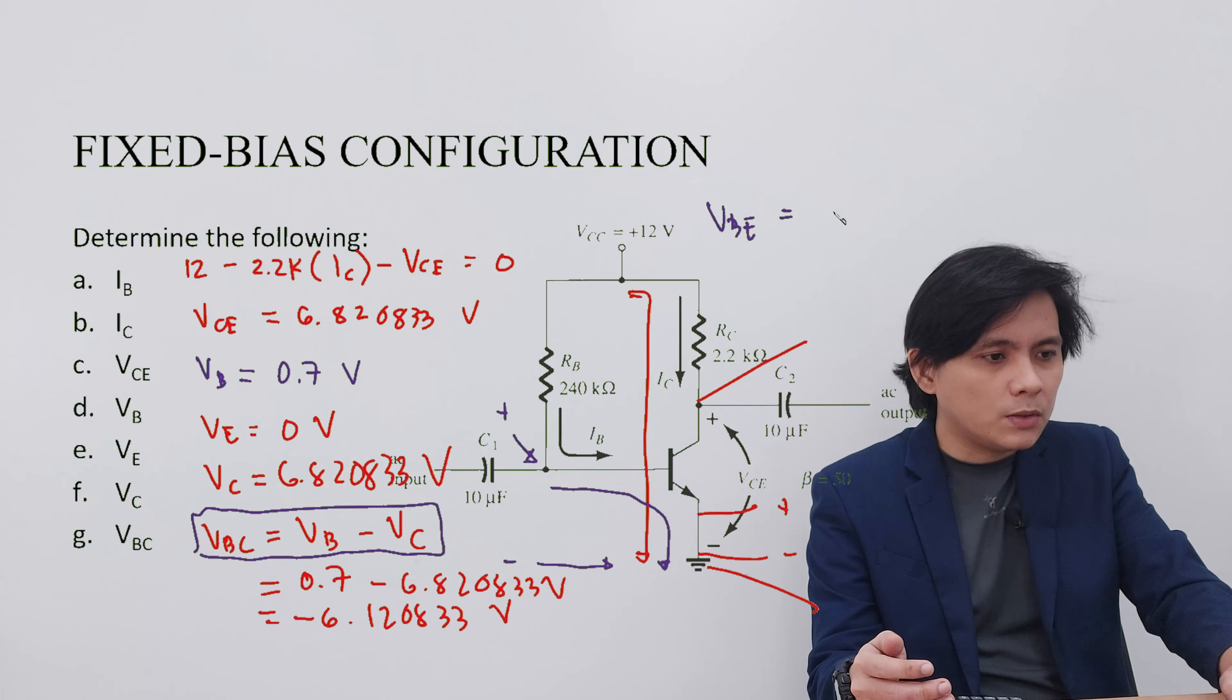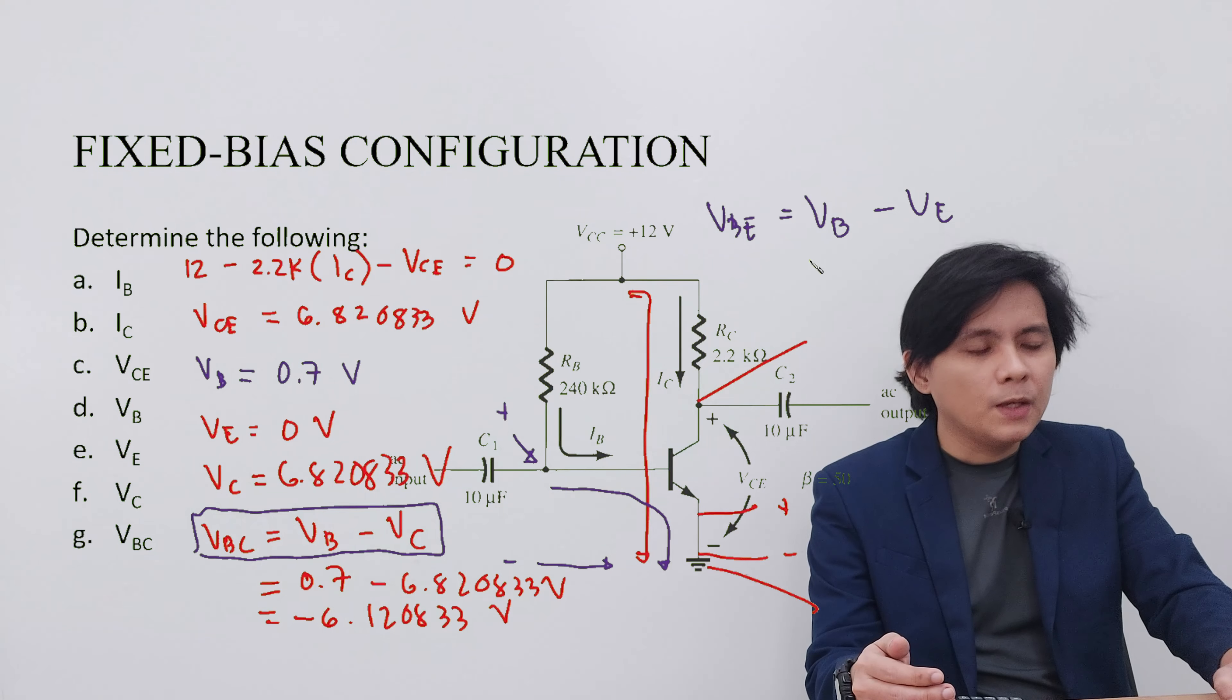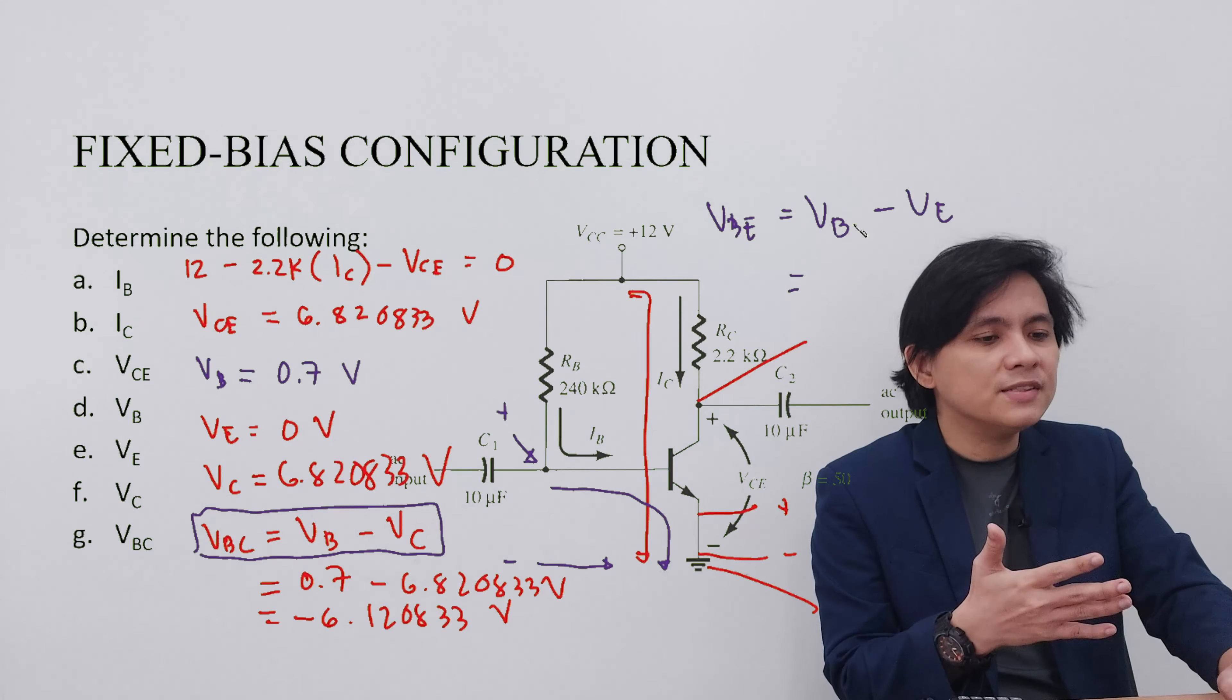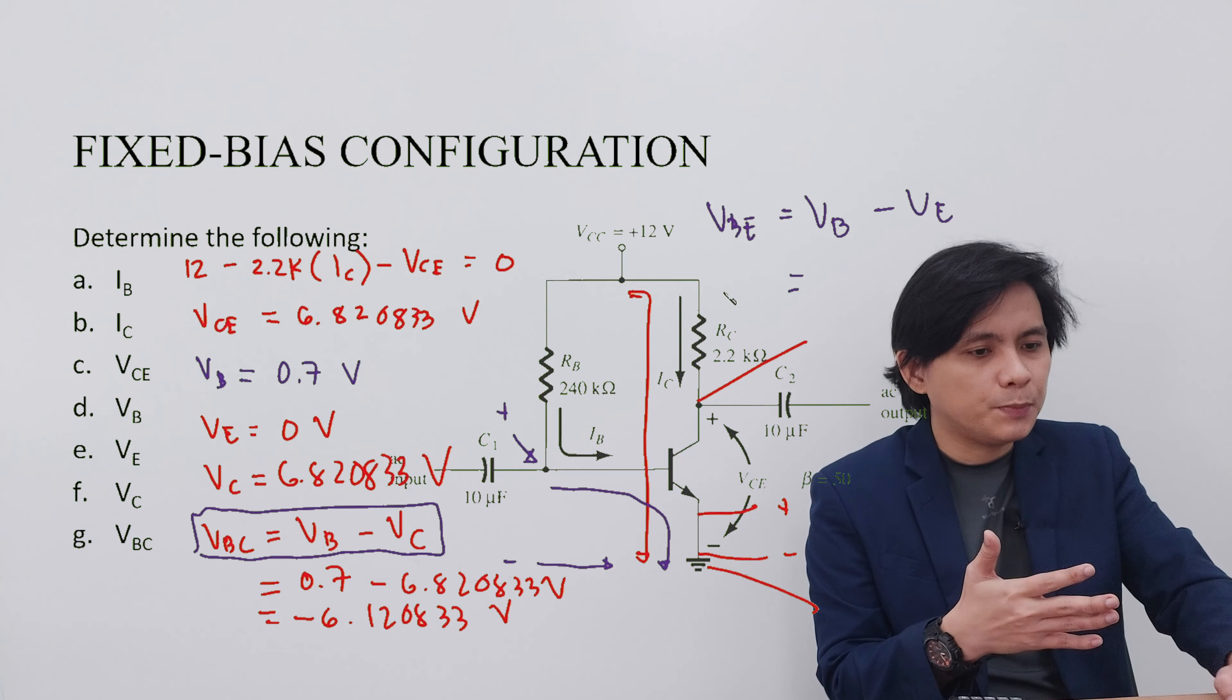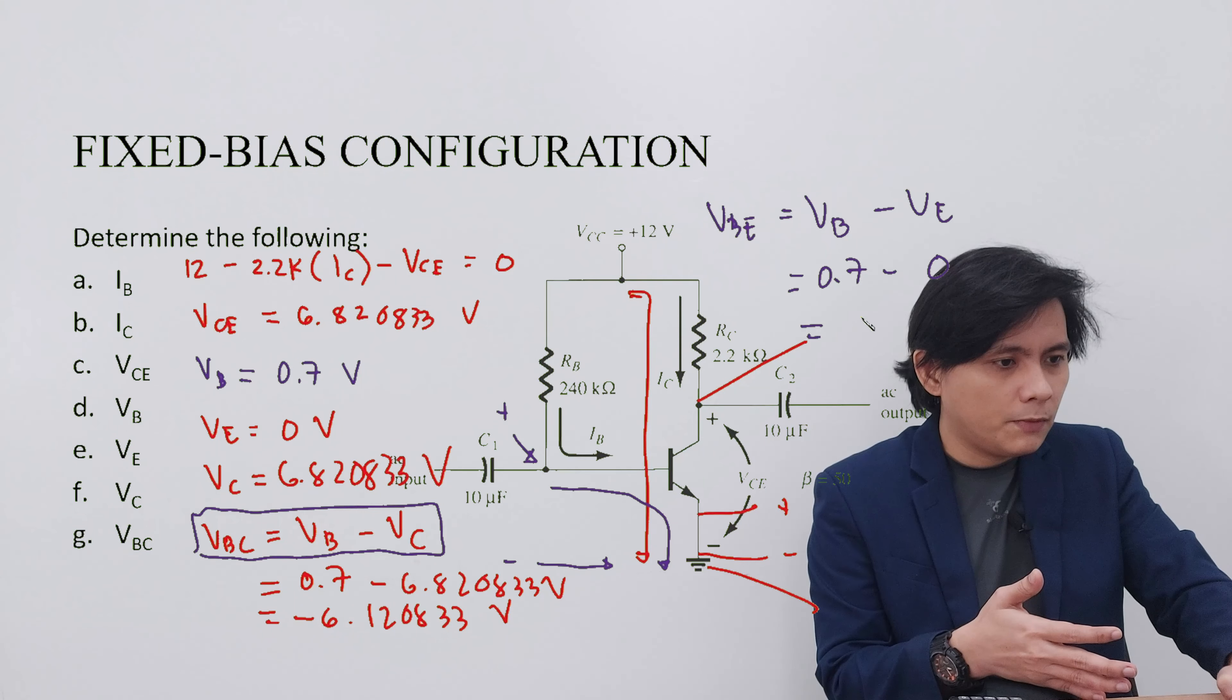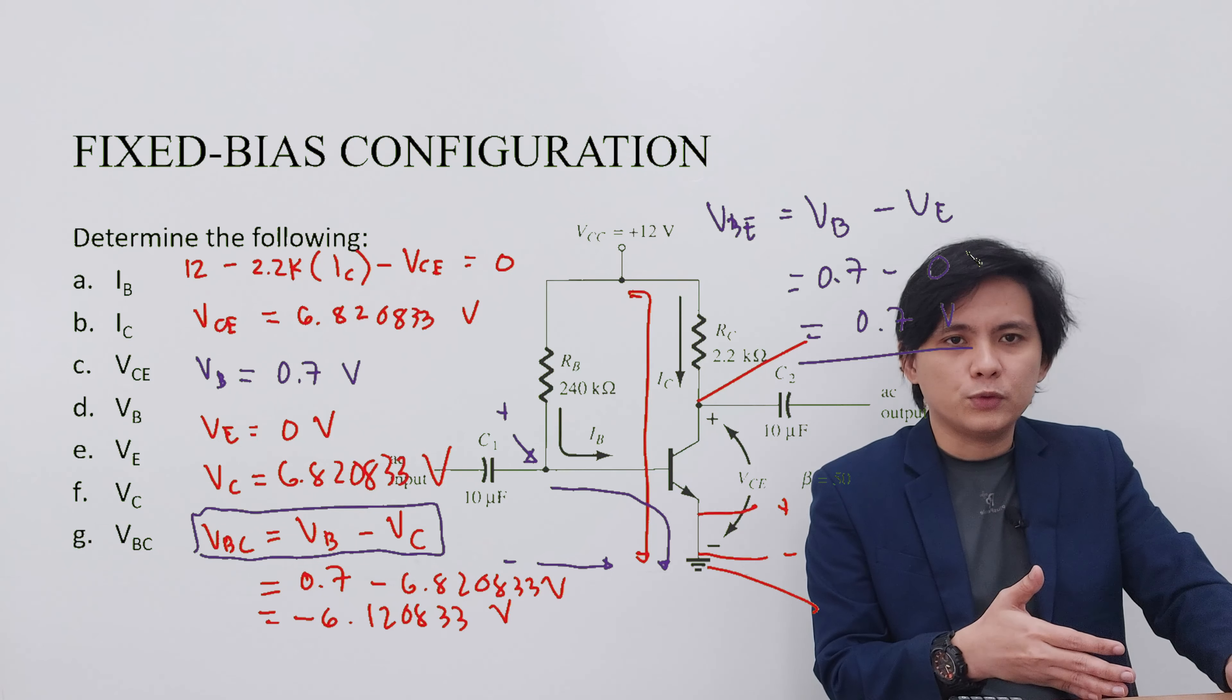For example, VBE is equal to VB minus VE. To prove this, our VB is 0.7 for this particular problem and our VE is 0. So therefore, our VBE is still 0.7 volts.